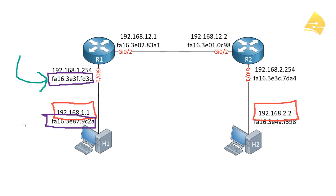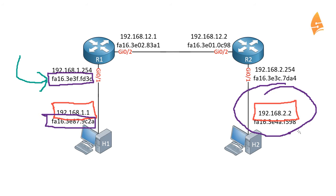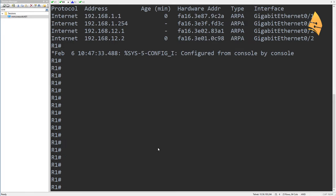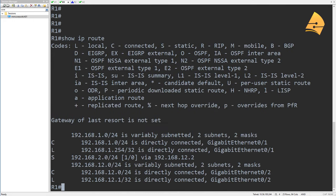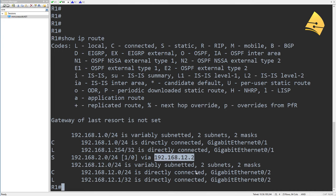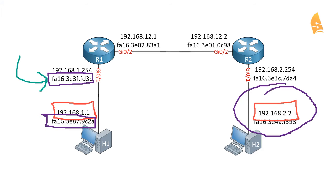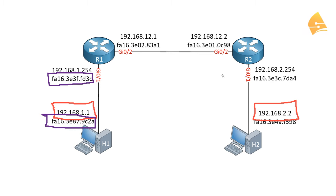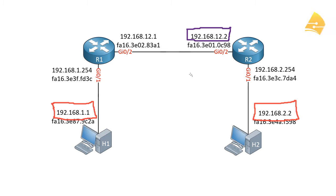R1 then looks at the destination of the IP packet, which is 192.168.2.2, and looks in its routing table for a route that matches this destination. We do have a matching route entry, and we find a next hop address: 12.2, which is the address of R2. So that is our next hop to reach host 2. R1 also has an entry showing that this network is directly connected, so it knows which interface to use to reach 12.2.